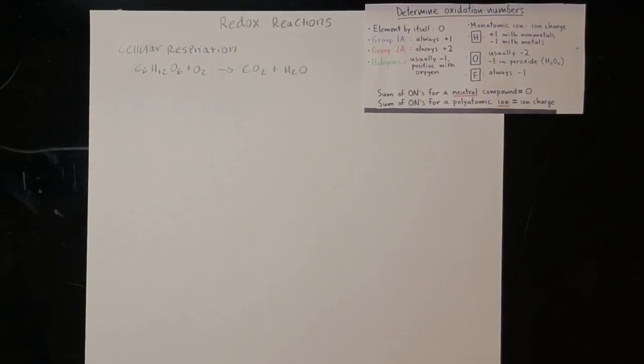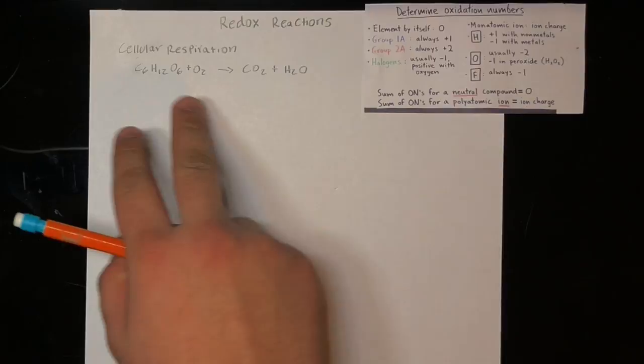Hello there students. Today we're going to talk about redox reactions and how to balance them. To start off, what is a redox reaction? A redox reaction is a transfer of electrons from one species to another — it is when an atom loses an electron and another atom gains electrons. To show you this concept, I'll be using cellular respiration as an example: glucose plus oxygen gives us carbon dioxide plus water.